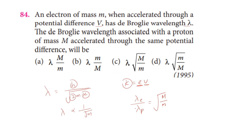So the de Broglie wavelength of the proton equals the wavelength of the electron times the square root of m over M, where m is the electron mass and M is the proton mass.